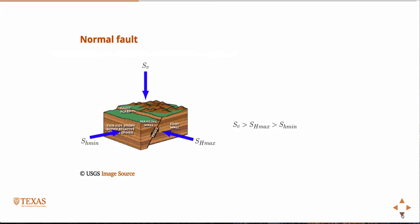So, in an Anderson normal faulting regime, the vertical stress is the maximum, and SH max is greater than SH min. The reason being, this is the faulting regime in which this ordering of principal stresses would accommodate.